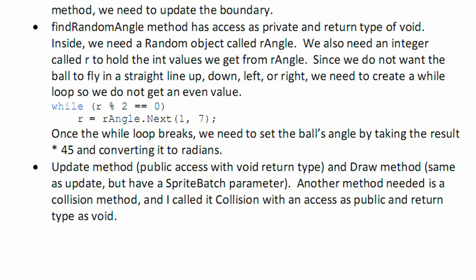So we do not want it even. So while r modulus 2 is equal to 0, that says while r is even, we are going to say r is equal to rAngle.next. And it will choose a random number between 1 and 7. So once the while loop breaks, we need to set the ball's angle by taking the result times 45 and converting it to radians.